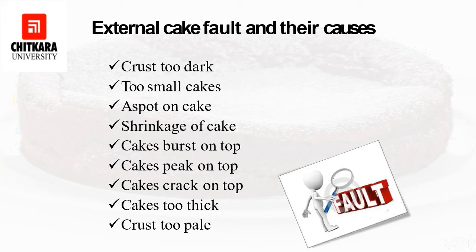A pale crust — lacking a good golden color — can be caused by too little sugar, lack of milk or liquid agents, very slow baking, or a wet oven atmosphere.